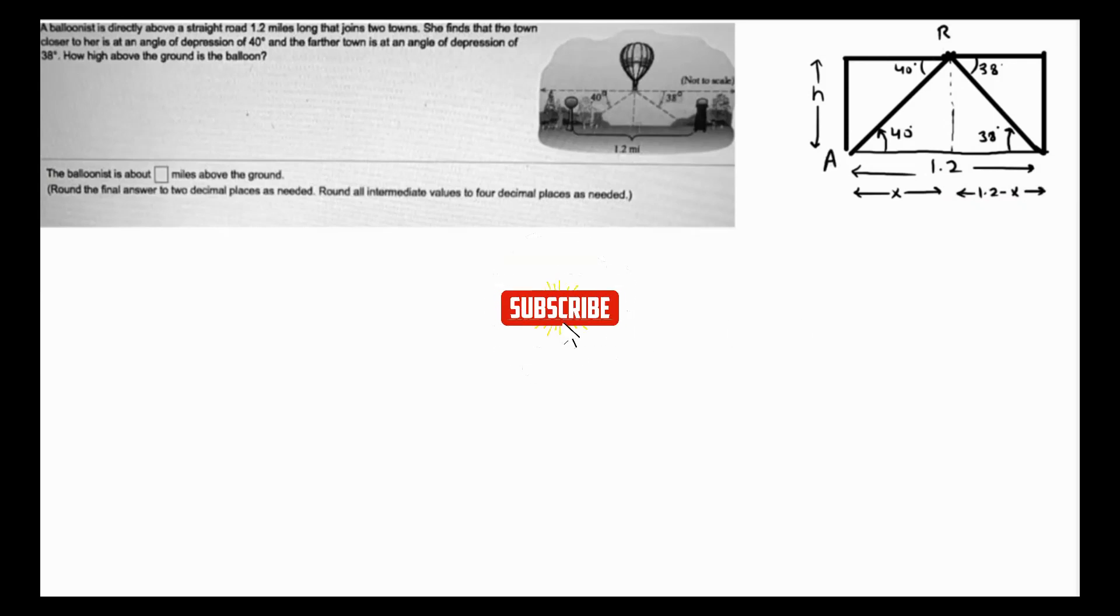Let's mark the vertices as A, B, C, and D. In triangle ABD, tan of 40 degrees is going to be opposite, which is BD, which is h, over adjacent, which is x. So this means that x tan of 40 degrees is h, which means h equals x tan of 40 degrees. Let's call it equation 1.